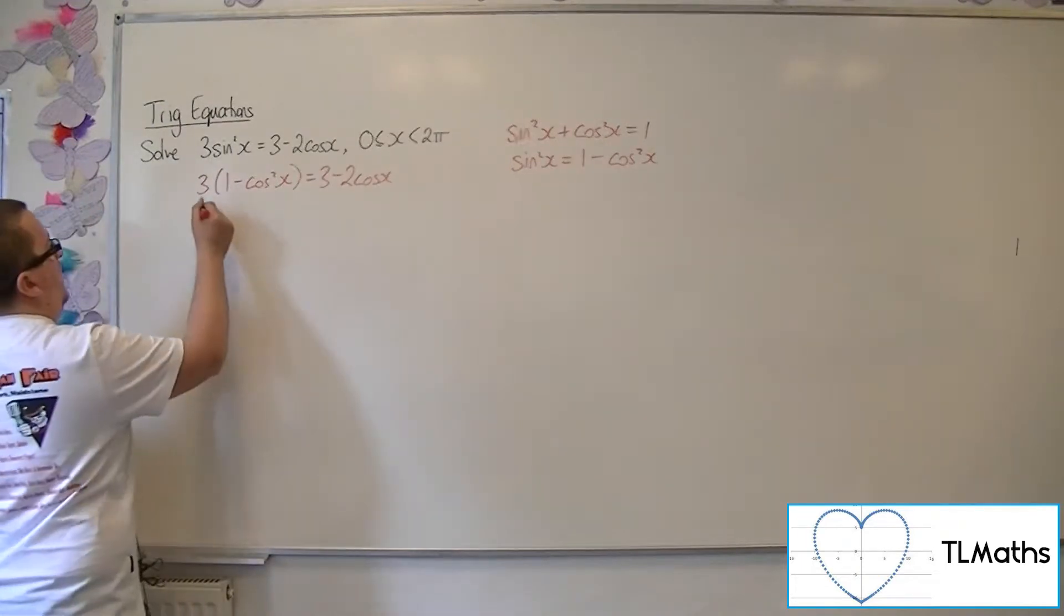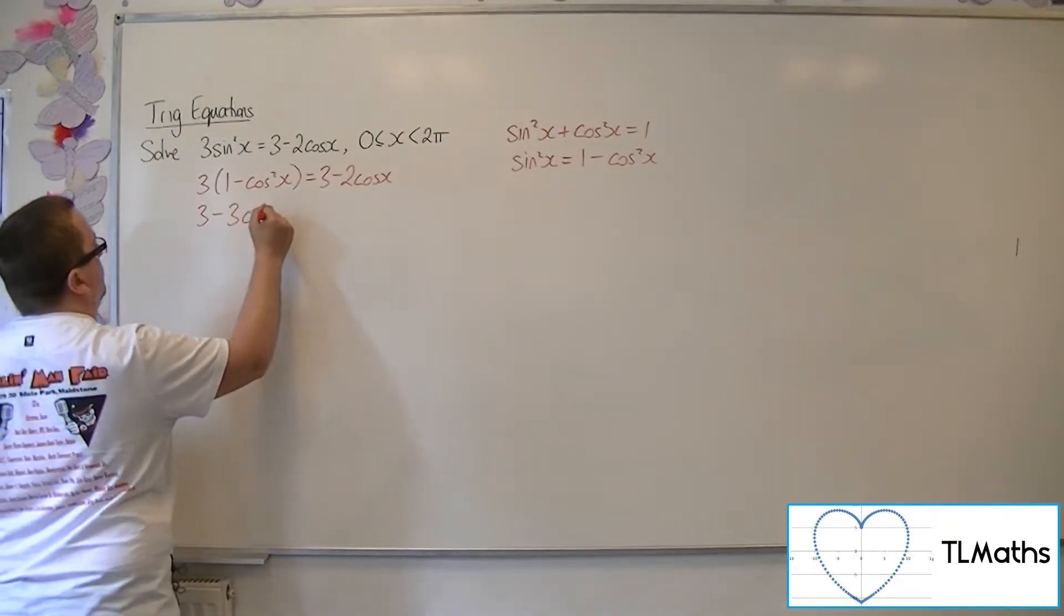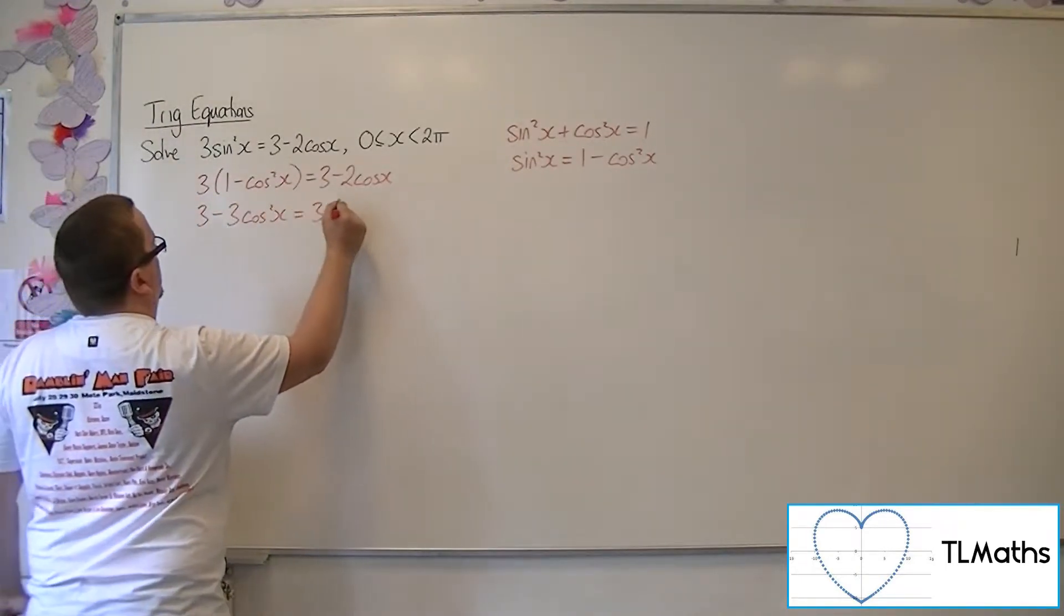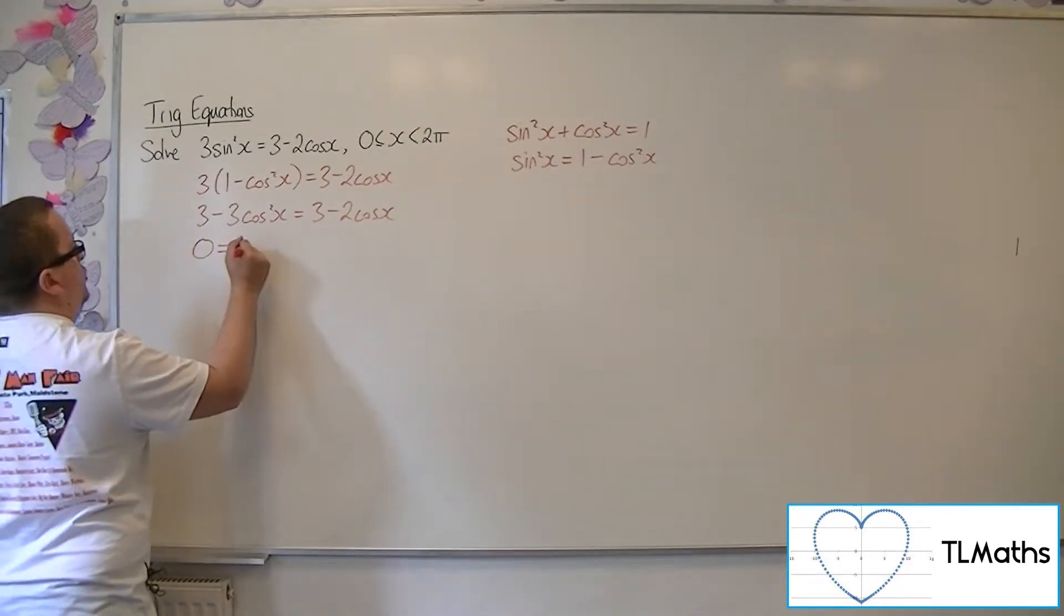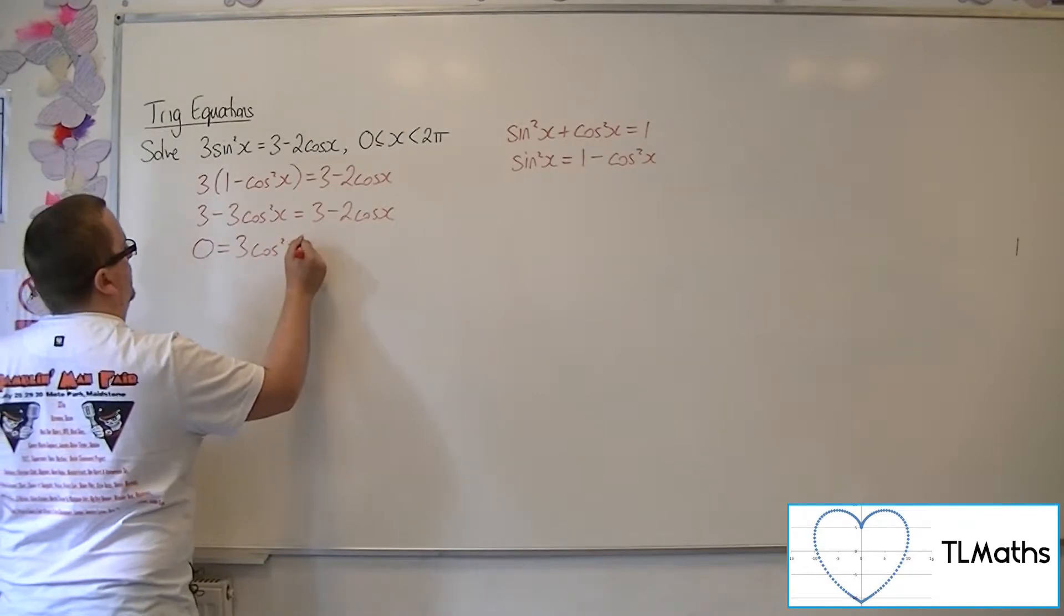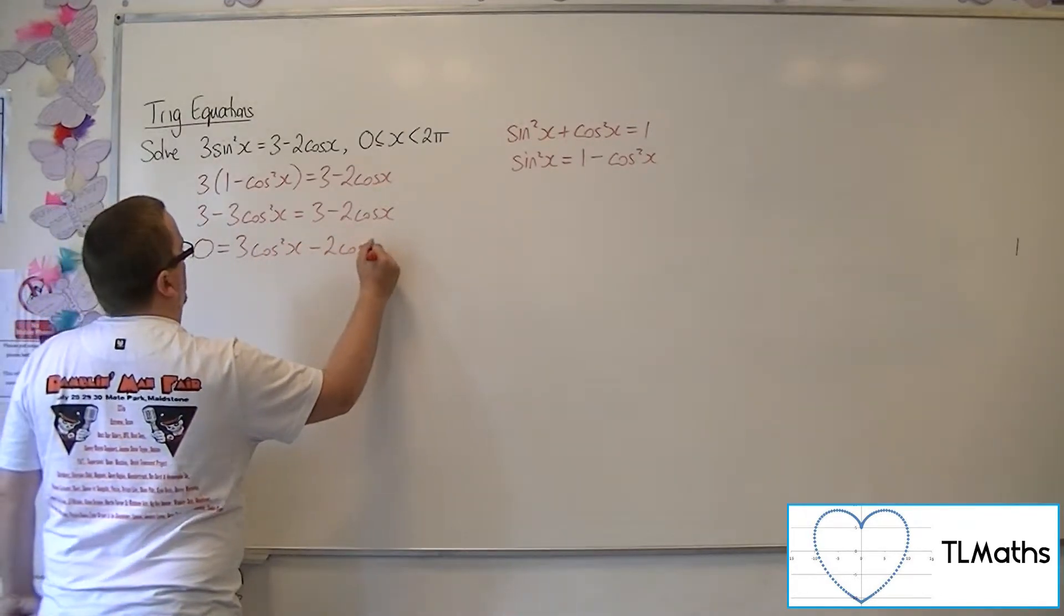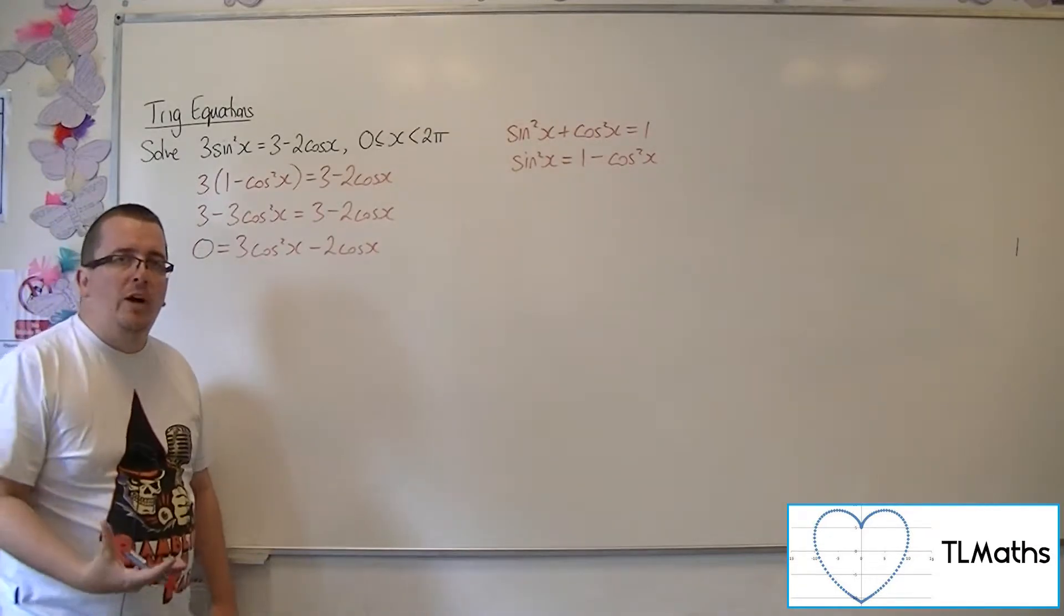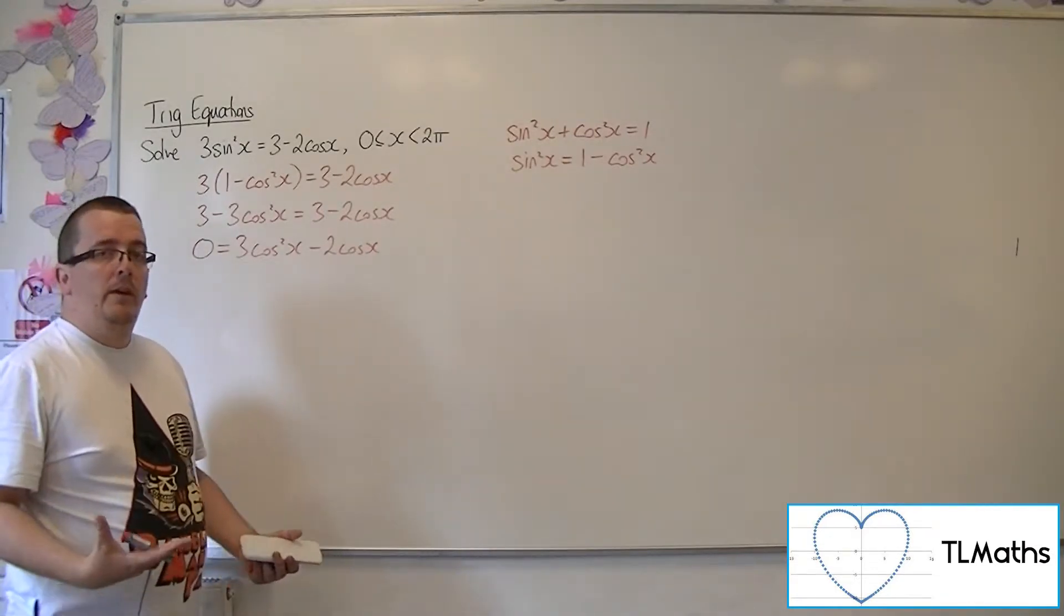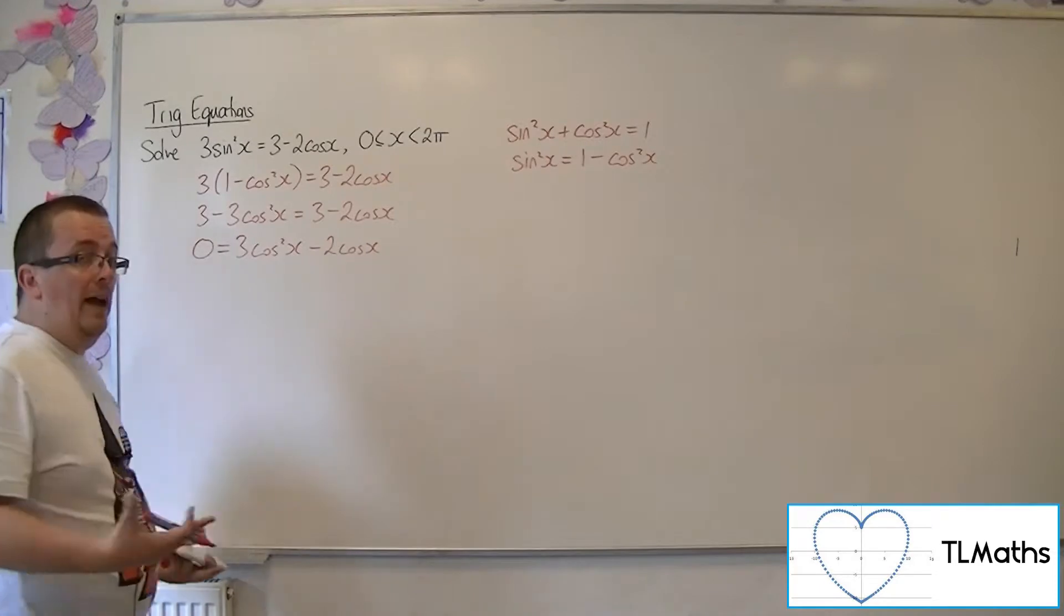Then you can expand the bracket and then move everything onto the right-hand side of the equation. The 3's cancel, leaving you with a quadratic equation just in cosine.